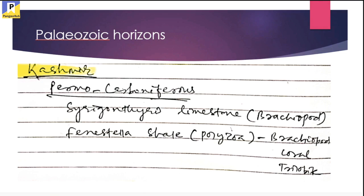Next are the Paleozoic fossil-bearing horizons of India. These rocks are mainly deposited in the Kashmir region. The age of these rocks is Permo-Carboniferous, and the two fossil-rich formations are known as the Syringothyris Limestone and the Fenestella Shale. Syringothyris is a brachiopod and Fenestella is a polyzoan. In the Fenestella Shale, rich assemblages of brachiopods, corals, and trilobites are found.